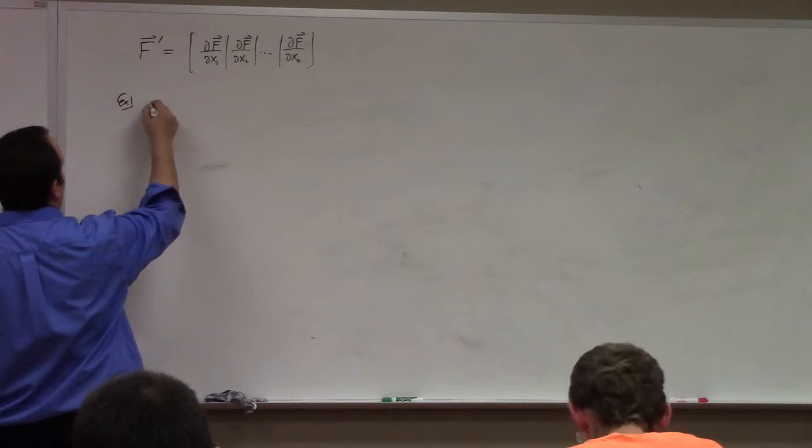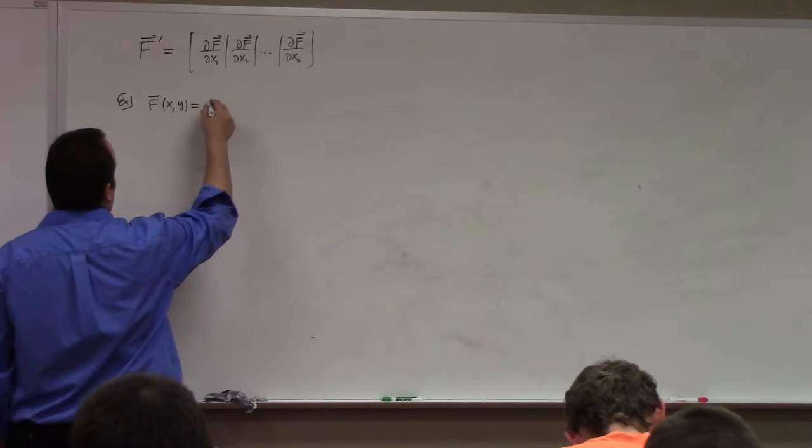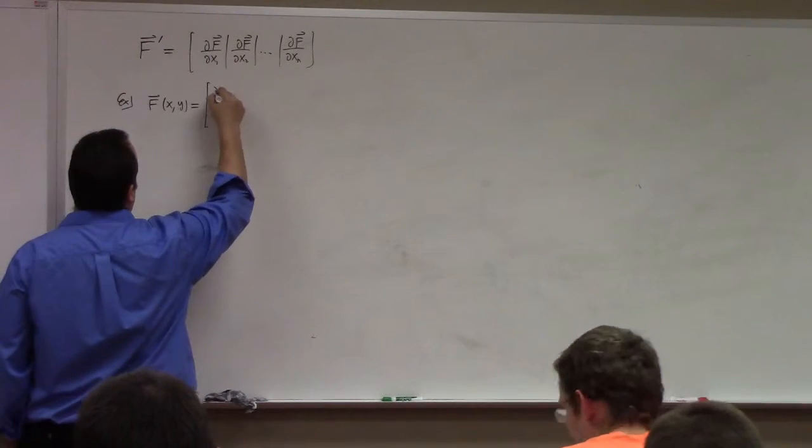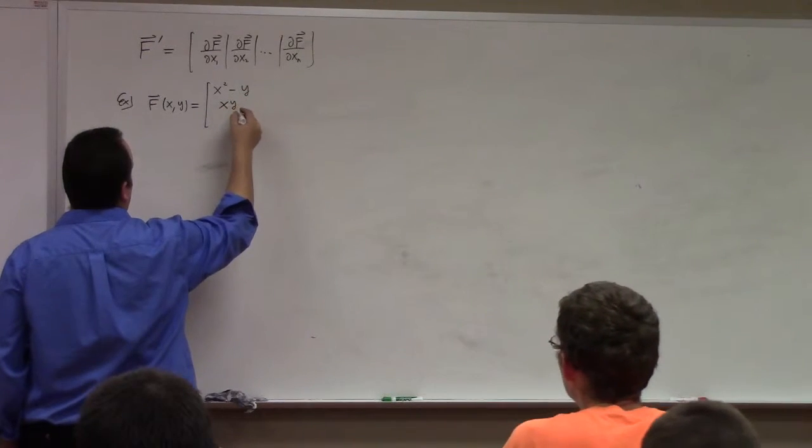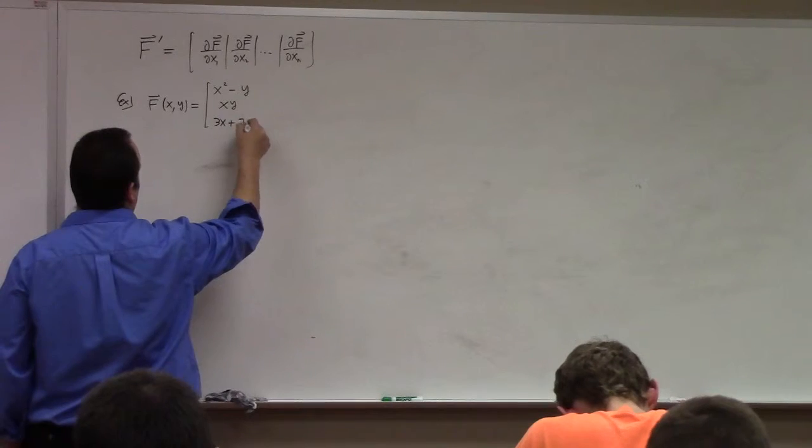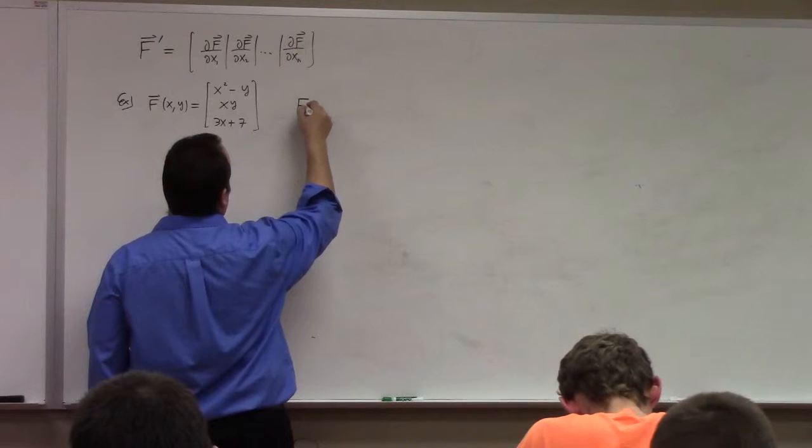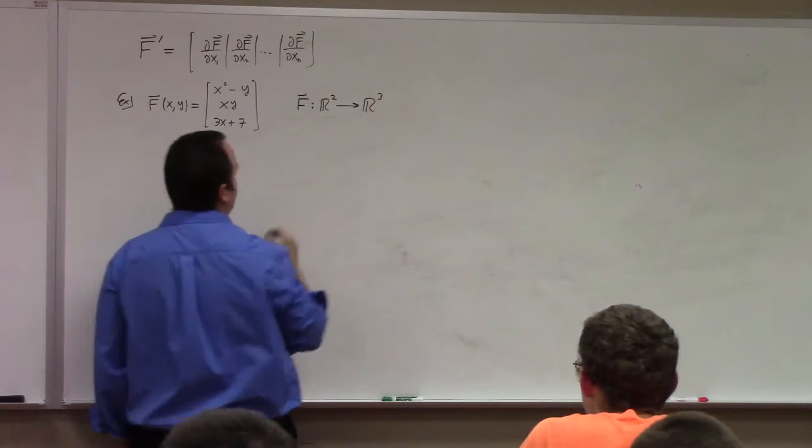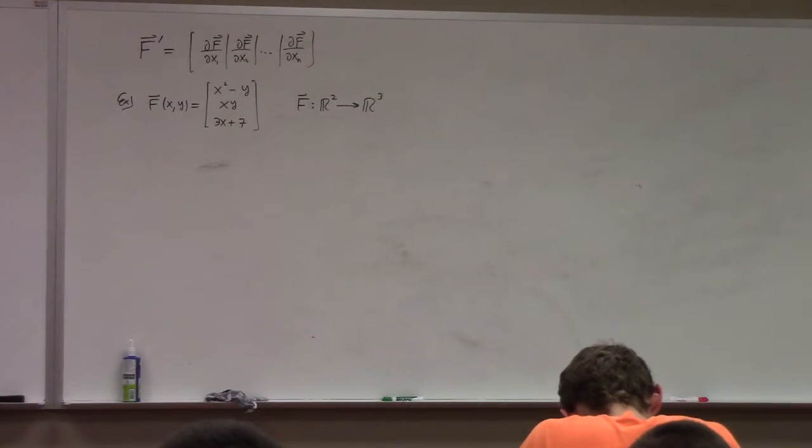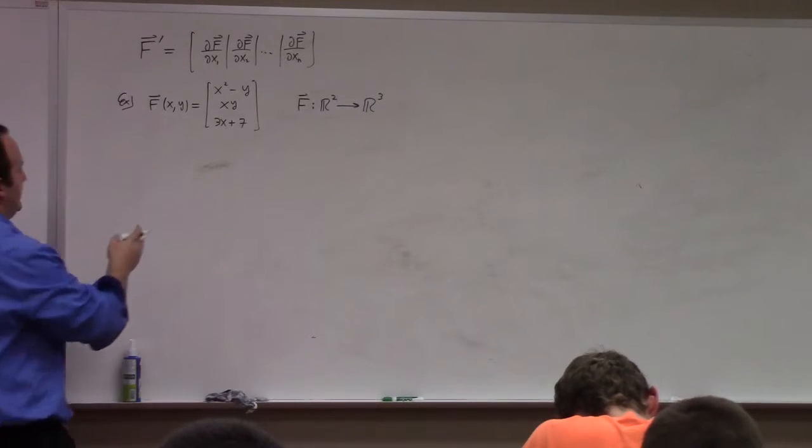For example, if I have f of x,y equal to, let's say, x squared minus y, xy, and 3x plus 7. So here my function would be something like, it's a mapping that takes in R2 and it spits out R3. We actually use functions like this later in the course. They're parameterizations of surfaces.